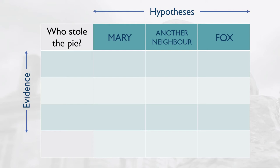Now this is a very simplistic world, so the evidence is going to reflect that. For us to figure out who stole the pie, the evidence suggests that the culprit would have to like lemon meringue pie. As it happens, all three of our possible culprits like lemon meringue pie, so they each get a plus alongside their names.